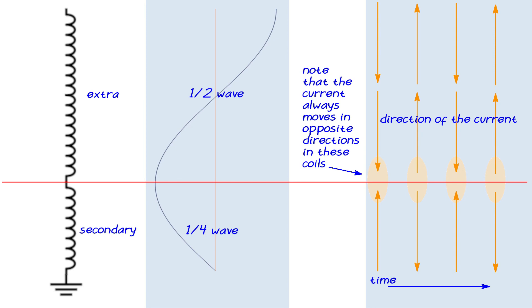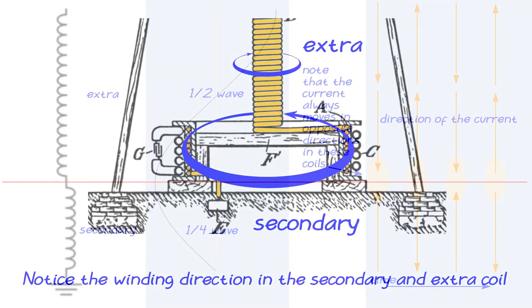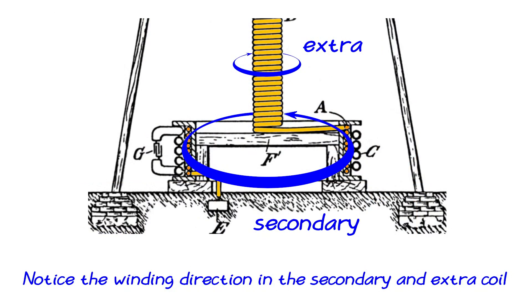Note that the current in both coils is always in opposite direction. It therefore helps to wind these coils in opposite direction, as Tesla always shows in his drawings.